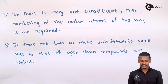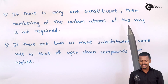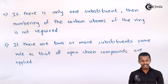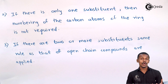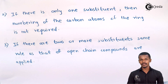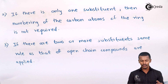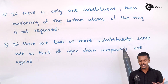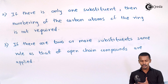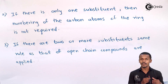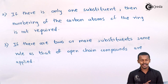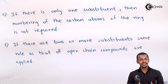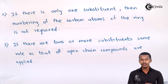The second rule: if there is only one substituent, numbering of the carbon atoms of the ring is not required. The third rule: if there are two or more substituents, the same rules as for open-chain compounds are applied to give the IUPAC nomenclature.